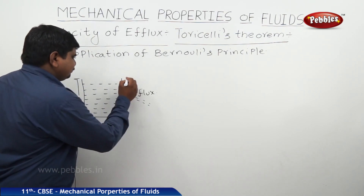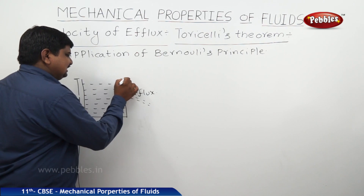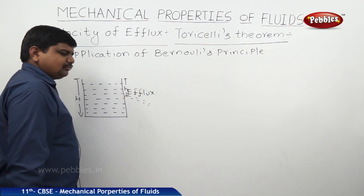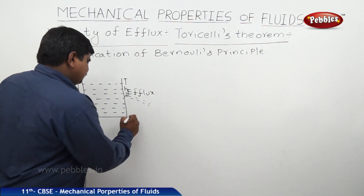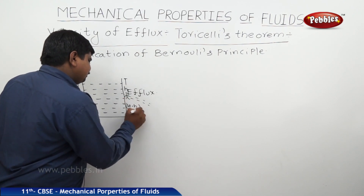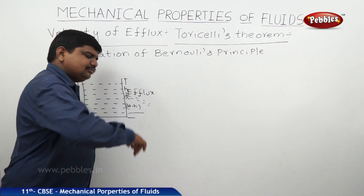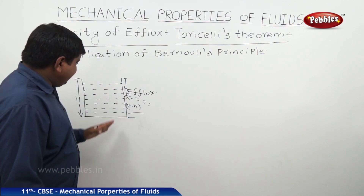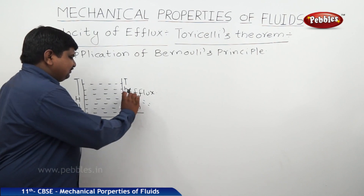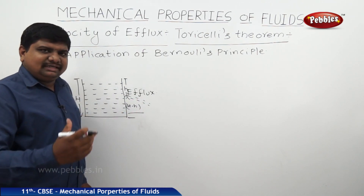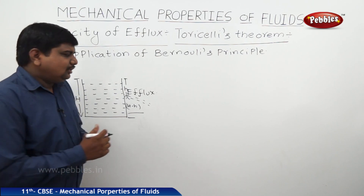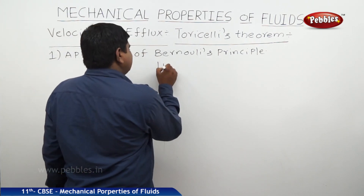This hole is at a distance of h from the top surface. From the bottom, it is at a height of H minus h. What is the velocity of efflux through this hole? This will be determined by using Bernoulli's principle.